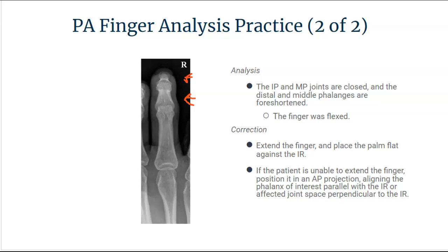If the patient is unable to extend the finger, you can position the finger in an AP projection, aligning the phalanx of interest parallel with the IR or the affected joint space perpendicular to the IR. I would suggest trying to first obtain the projection in the correct stated PA way, or you can take both projections and send them to the physician — just make sure you give a detailed description of why you did what you did.